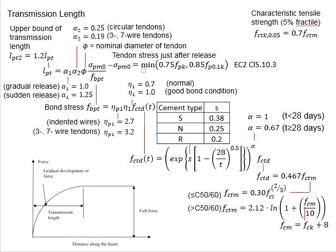This slide shows the equations to determine transmission length. L_pt2 represents the upper bound of transmission length, which is about 1.2 times L_pt. The transmission length can be calculated from this equation.